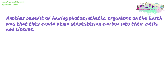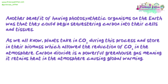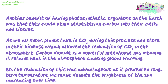Another benefit of having photosynthetic organisms on Earth was that they could begin sequestering carbon into their cells and tissues. As we know, plants take in CO2 during this process and store it in their biomass, which allowed the reduction of CO2 in the atmosphere. Carbon dioxide is a powerful greenhouse gas, meaning it retains heat in the atmosphere causing global warming. So the reduction of this was advantageous, as it prevented long-term temperature increase despite the brightness of the sun increasing over time.